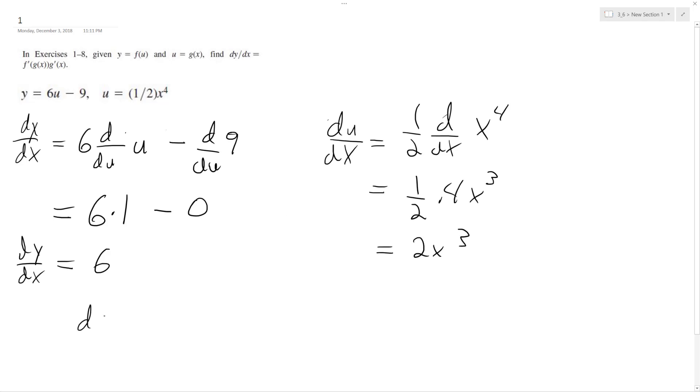Then we multiply them together for dy/dx. We get 6 times 2x to the 3rd, which gives us 12x to the 3rd. That's it.